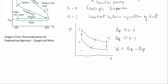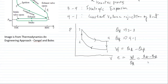The efficiency of the cycle is equal to the work divided by the heat added: η = W / Q_A = (Q_A − Q_R) / Q_A. Q_A is assumed to be the heat coming in from the fuel and air mixture. Multiply by 100 to express it as a percentage.